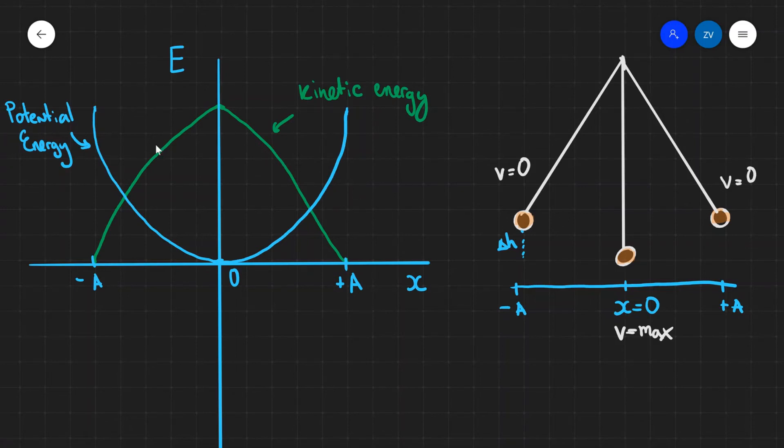Or when a spring extends, the more you extend it, the more potential energy it has. Once the pendulum is going through the equilibrium point, which is just here, our potential energy goes back to zero.